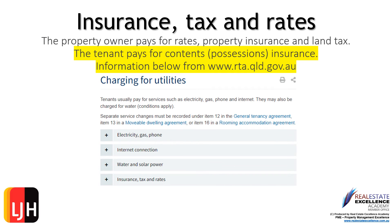During your tenancy, it is your responsibility to pay for your own contents, possessions, and insurance. Refer to the terms of the agreement regarding electricity, gas, phone, internet, water, or solar power to be aware of all your responsibilities and requirements for connections of such services. The property owner pays for rates, property insurance, and land tax. Our agency strongly recommends that you ensure you have contents and possessions insurance.